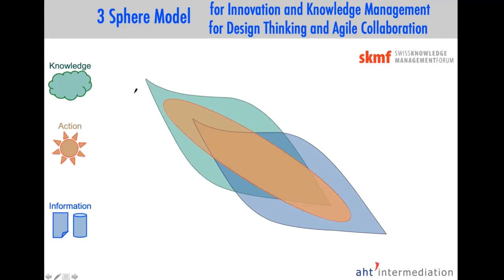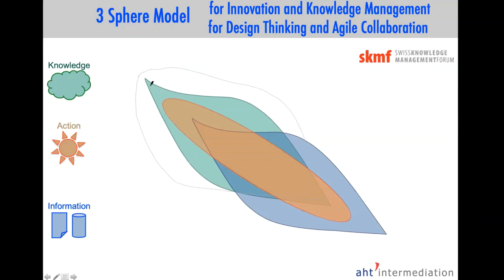Now, what we see here is the knowledge sphere. As you see, the knowledge sphere has a leaf-type shape. Why? Because it starts with a notion, with an idea, with a feeling, then we discuss, it gets broader, and then it disappears, because we are humans and we forget.